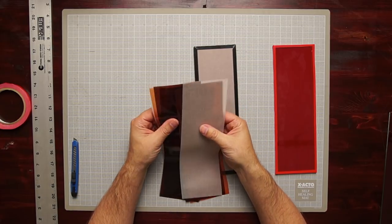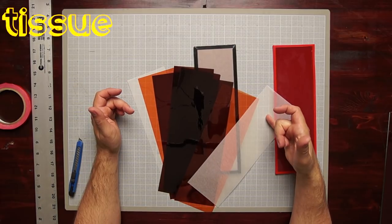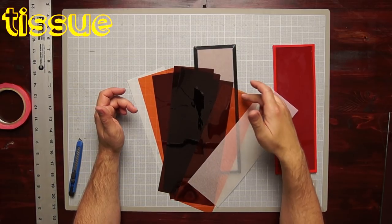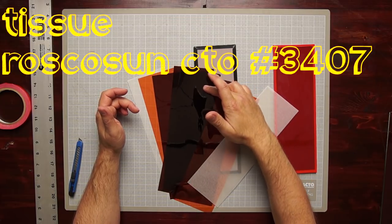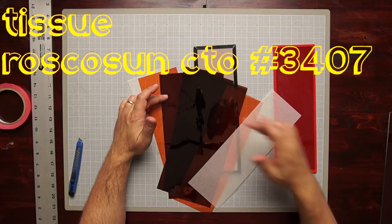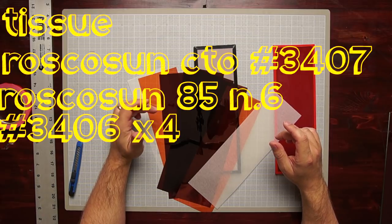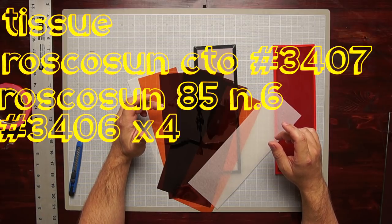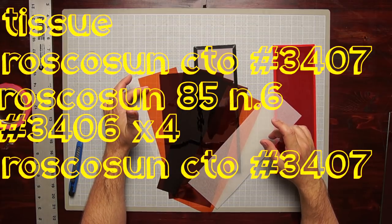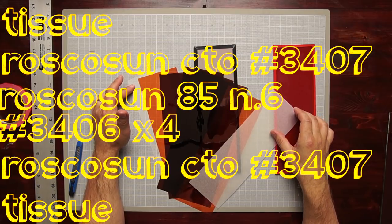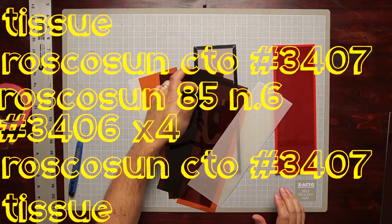And then inside we have its tissue or vellum, CTO number 3407, then one, two, three, four pieces of Rosco Sun 85N.6, which is number 3406, and then another piece of 3407 and another tissue. So this is a total layer of eight pieces.